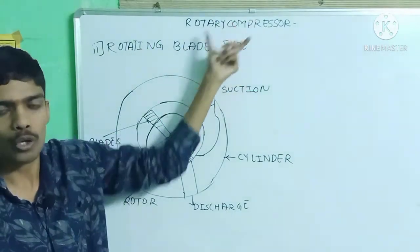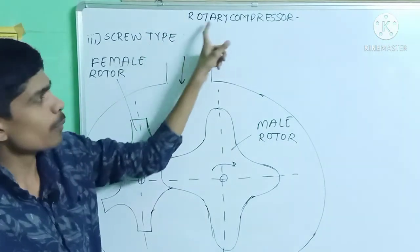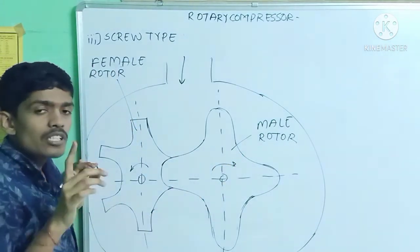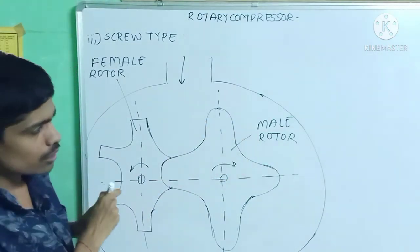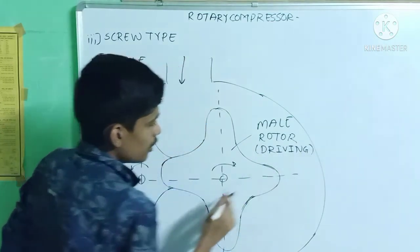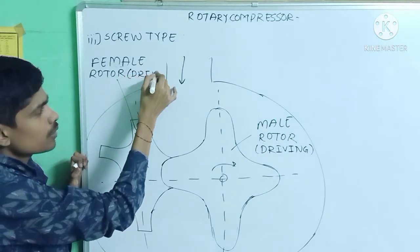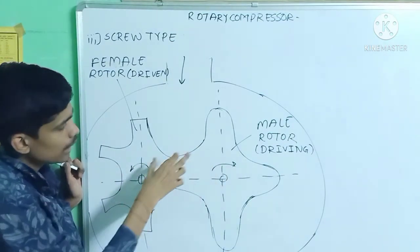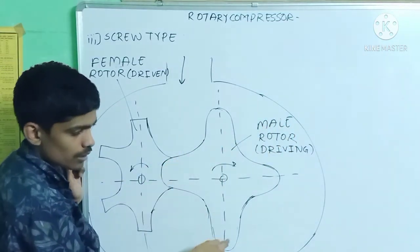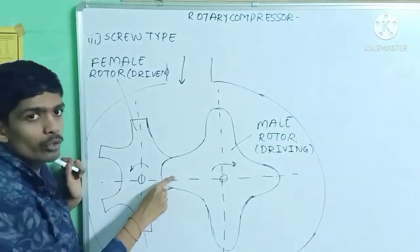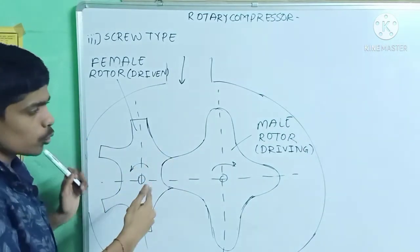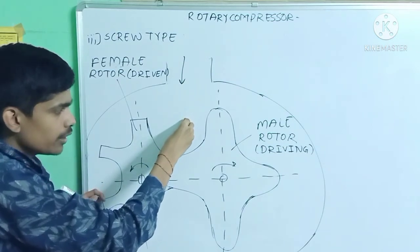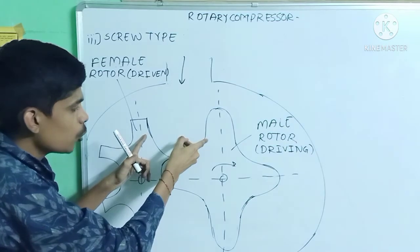The third and last type is the screw type rotary compressor. It consists of a female rotor and a male rotor. The male rotor is connected to the motor and is the driving rotor; the female rotor is the driven rotor. They rotate in opposite directions and are engaged together. The male rotor has four lobes and the female rotor has six helical flutes. When the rotors rotate, low pressure, low temperature vapor refrigerant enters and passes through the space between the male lobes and female flutes.